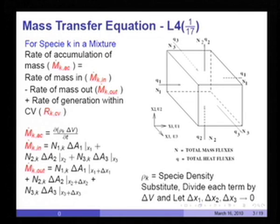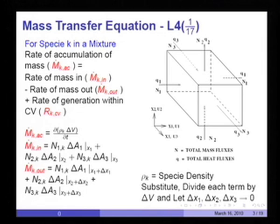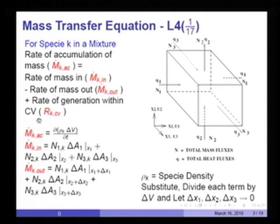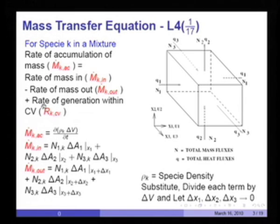What does the law say for a species? For a species k in a mixture, the rate of accumulation of mass of species k equals rate of mass in minus rate of mass out plus rate of generation of species within the control volume. As a result of chemical reaction, some species are generated while others are destroyed. Each species will have either a generation or a destruction rate associated with it.